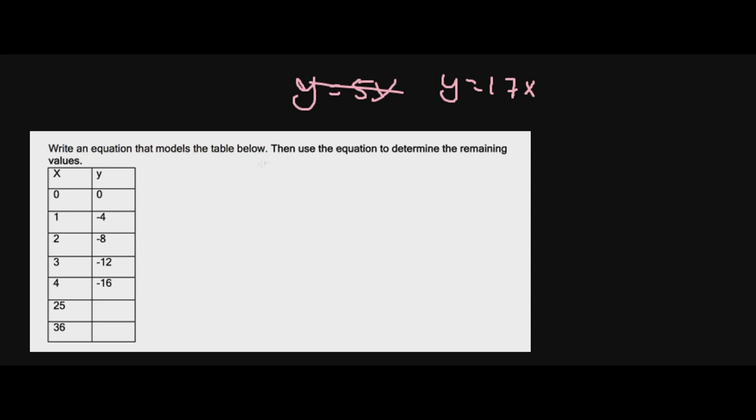Let's write an equation that models the table below. We start off at zero zero, fine. That's all fine and dandy. Well, what do we notice happening?